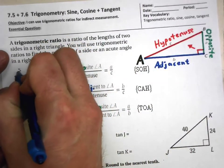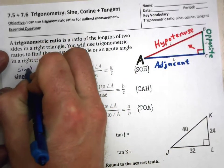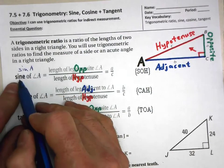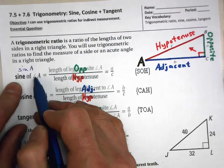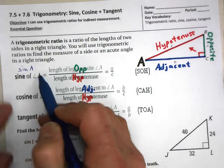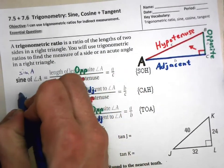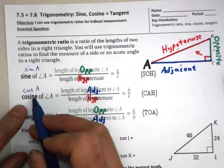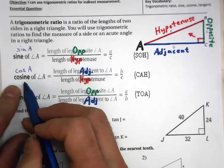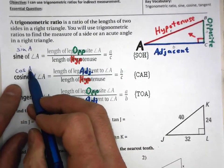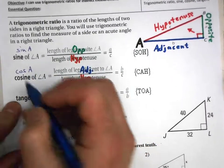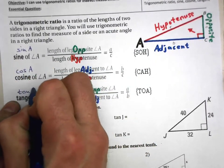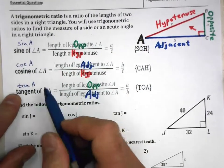Normally we see it written as 'sin' but we pronounce it as 'sine of angle A.' Or we'll see 'cos' and pronounce that as 'cosine of angle A.' These are kind of like abbreviations, shorthand.